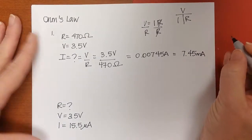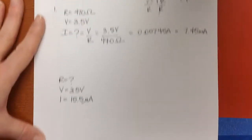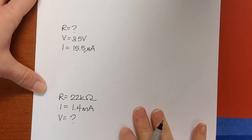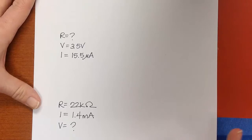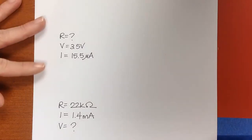All right, so now let's look at a second problem. And this one we have the resistance is the unknown, we know the voltage, and we have I in microamps.